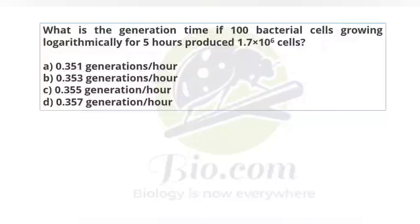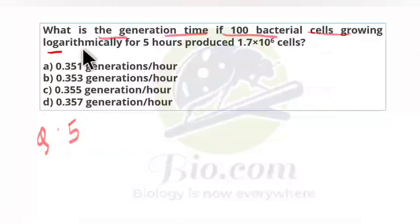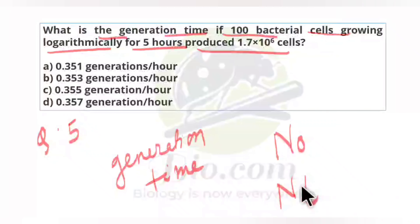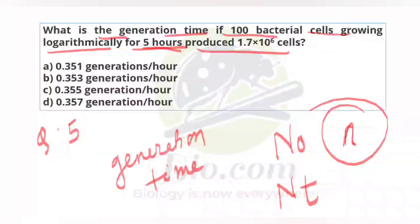Question 5: What is the generation time if 100 bacterial cells growing logarithmically for 5 hours produced 1.7 × 10⁶ cells? We have N₀ (initial cells) = 100, Nt = 1.7 × 10⁶, and time t = 5 hours. We need to find the generation time. The formula that applies here is n = (log Nt − log N₀) / log 2, because we are given the bacterial population after a certain time duration.